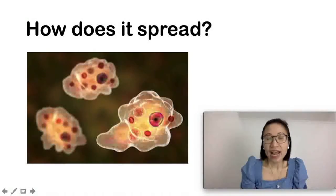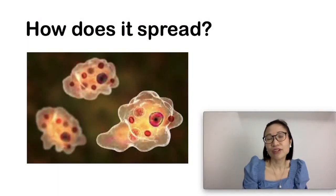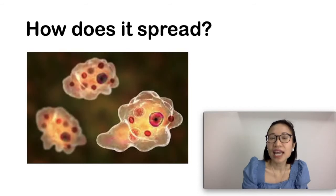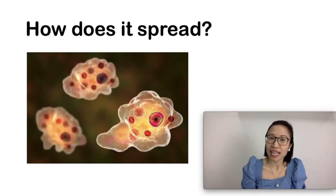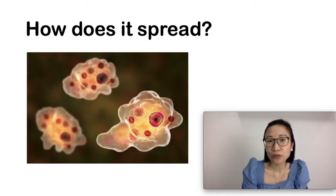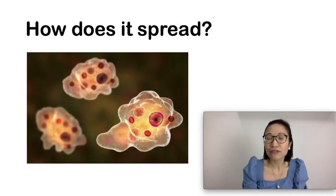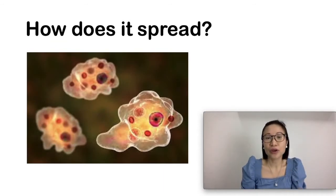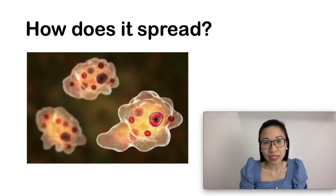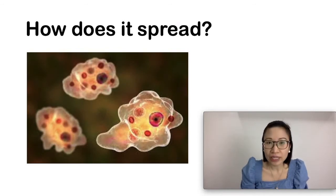So how does it spread? Amoebiasis is contagious. An infected person, even when he or she has no symptoms, can have the parasite in their intestine and can pass an infected stool, which can contaminate water or food. This is especially true in areas where the drinking water might be contaminated. It is also spread from person to person when hands are not washed properly. Amoebiasis is commonly seen in areas which are crowded and unsanitary.